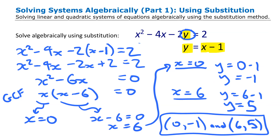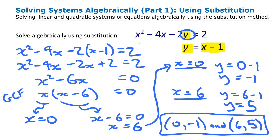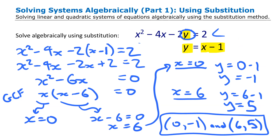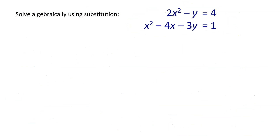You could verify these solutions by graphing both equations or by substituting each ordered pair into both equations to confirm they satisfy them. Now we're going to do another example using substitution. This second system has two quadratic equations, but the method is going to be the same.